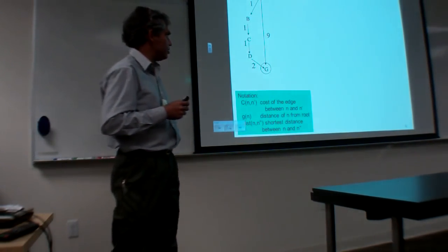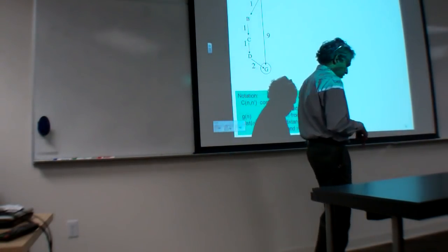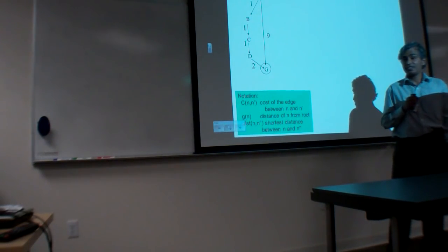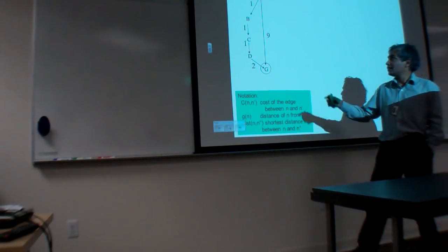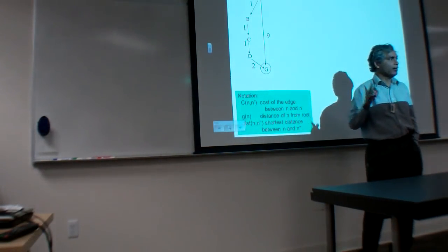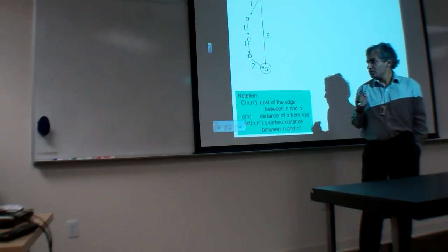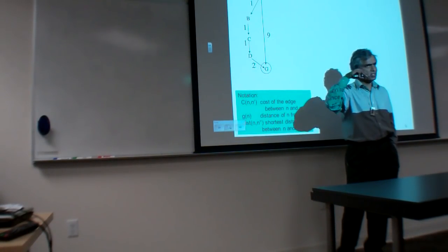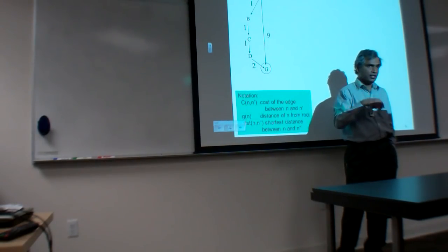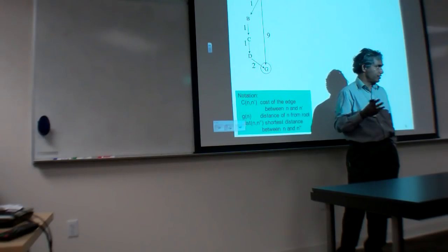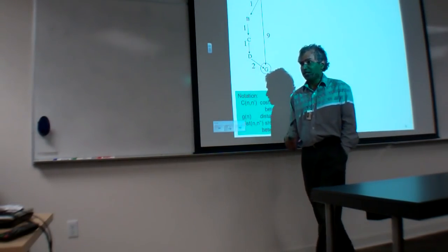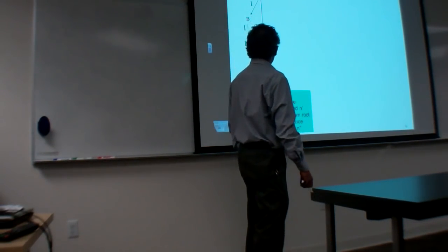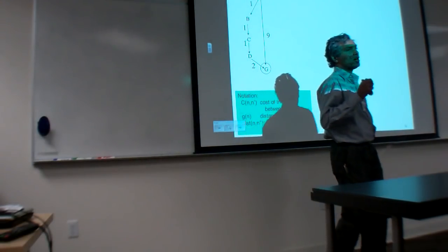We are going to be continuing basically yesterday's class, where we talked about blind search strategies where all the edge costs were uniform and they were cost one. So what we'll start doing today is consider a more general case. Yesterday we also talked about tree search as well as graph search with directed edges and graph search with undirected edges. So we're basically generalizing the model such that we have non-uniform costs on the edges.